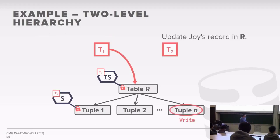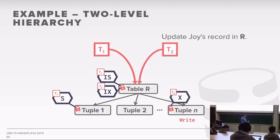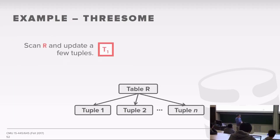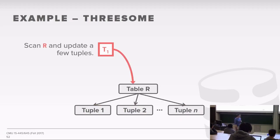At the top levels you take intention locks or explicit locks—shared or exclusive. At the leaf nodes you have to take shared or exclusive. In our example, T1 wants to read my bank account record from R—just one tuple. At the table level it gets an intention shared lock, then when it finds the tuple it takes the explicit shared lock. Transaction 2 wants to update a tuple, so it takes an intention exclusive lock at the table—compatible with intention shared—then takes the exclusive lock below.